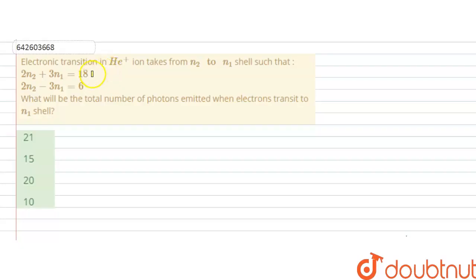Hello students, our question is electronic transition in helium ion takes place from N2 to N1 shell such that 2N2 plus 3N1 is equal to 18 and 2N2 minus 3N1 is equal to 6. What will be the total number of photons emitted when electrons transit to N1 shell?